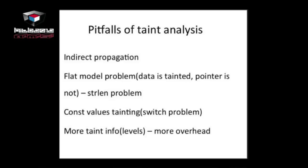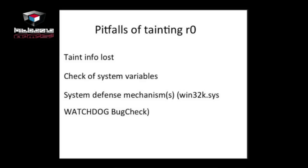The main pitfalls of taint analysis include problems with strlen — for example, if you have tainted data and strlen calculates the string length by subtracting pointers, the data are tainted but the pointers are not, so no tainted information propagates. Another pitfall is constant value propagation. You can solve all these problems, but if you enhance the levels of taint information, there's more overhead.